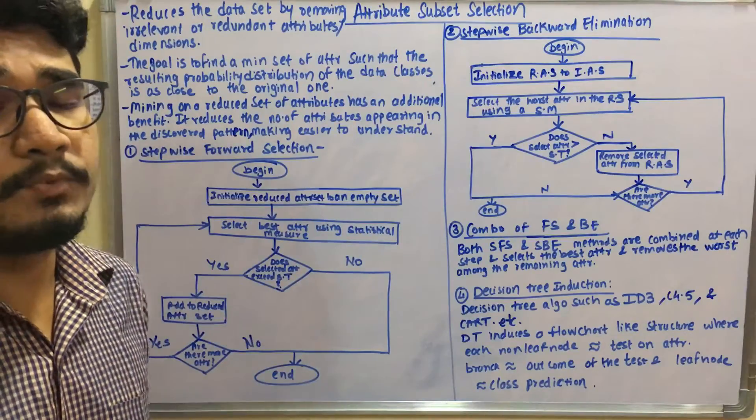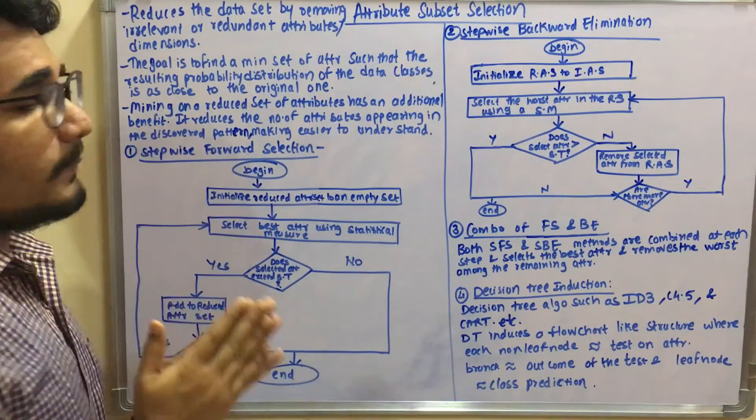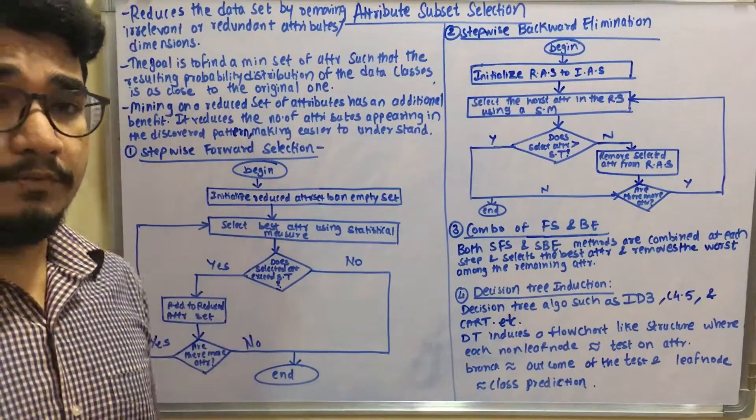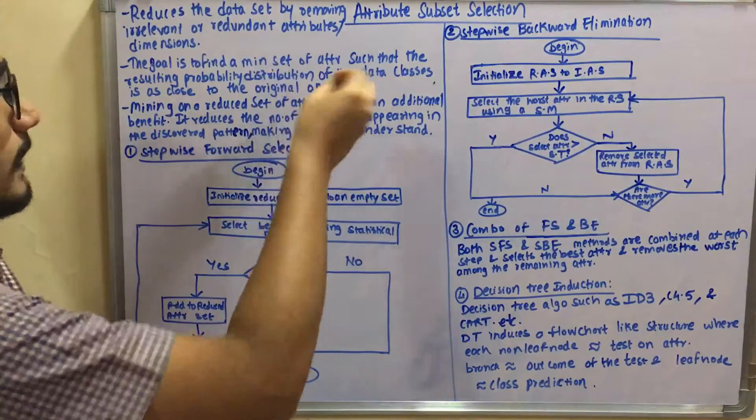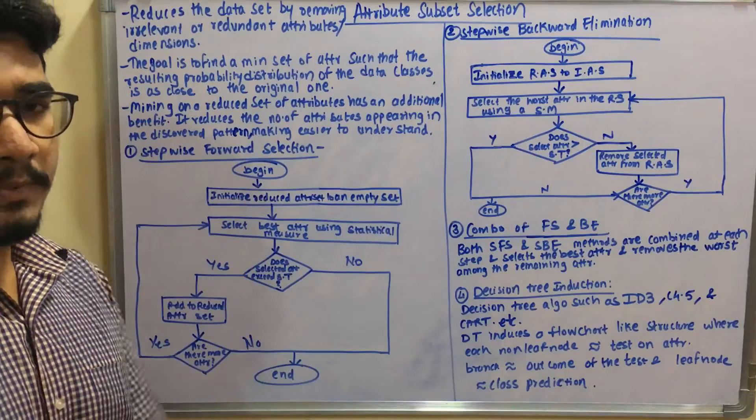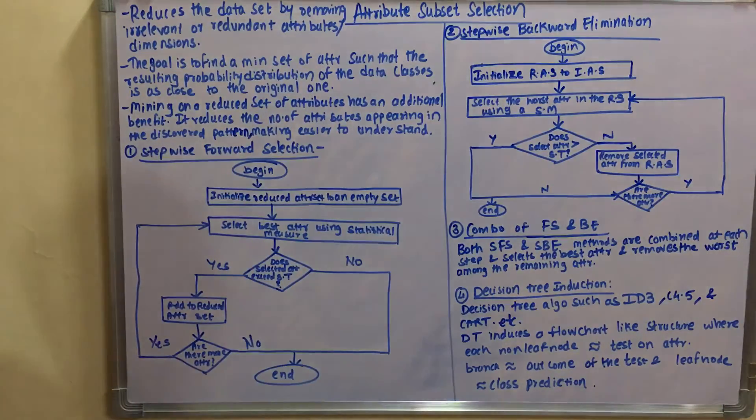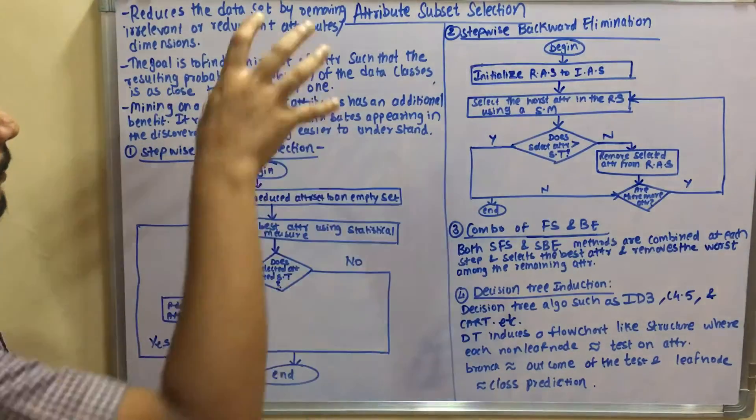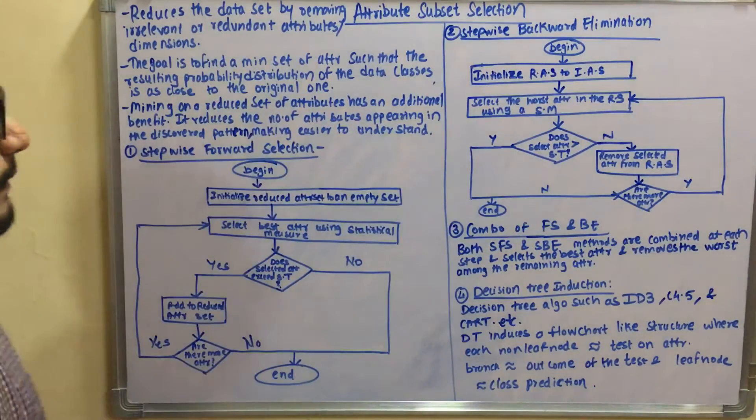What this means is that the original attribute probability distribution should be equal to the new one which you created. The main thing is that the probability distribution of the original and the new one has to be the same.